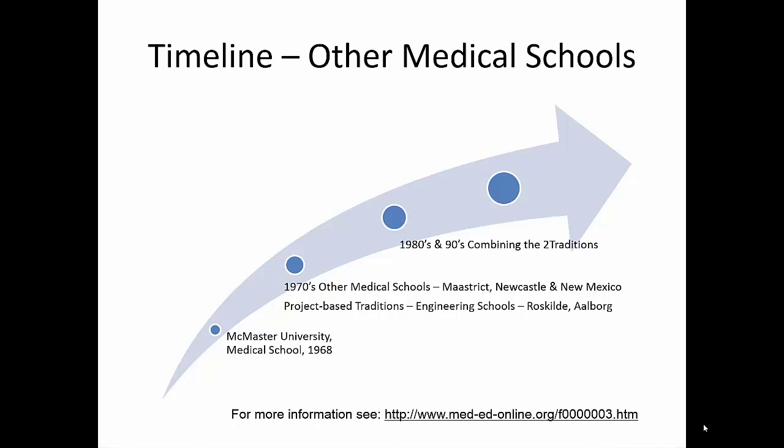Soon afterwards, three other medical schools adopted the McMaster model: the University of Limburg at Maastricht in the Netherlands in 1972, the University of Newcastle in Australia in 1976, and the University of New Mexico in the United States in 1979. They developed their own spheres of influence in addition to the Mecca at McMaster. From these four institutions sprang one of the most important educational movements of this century.